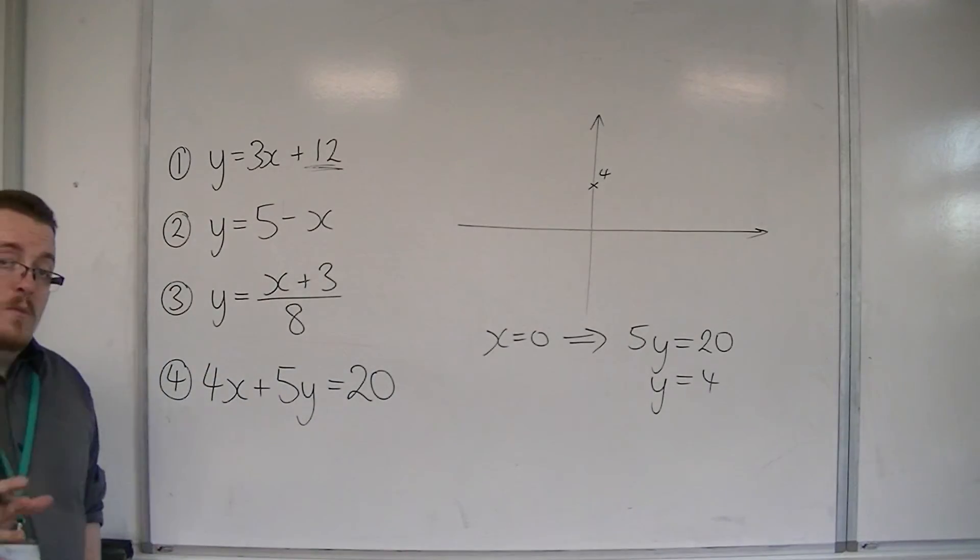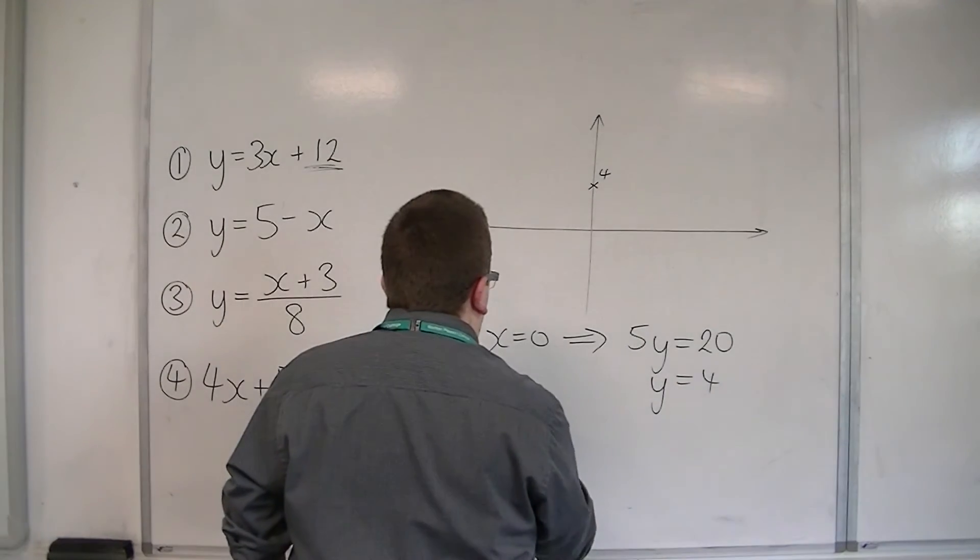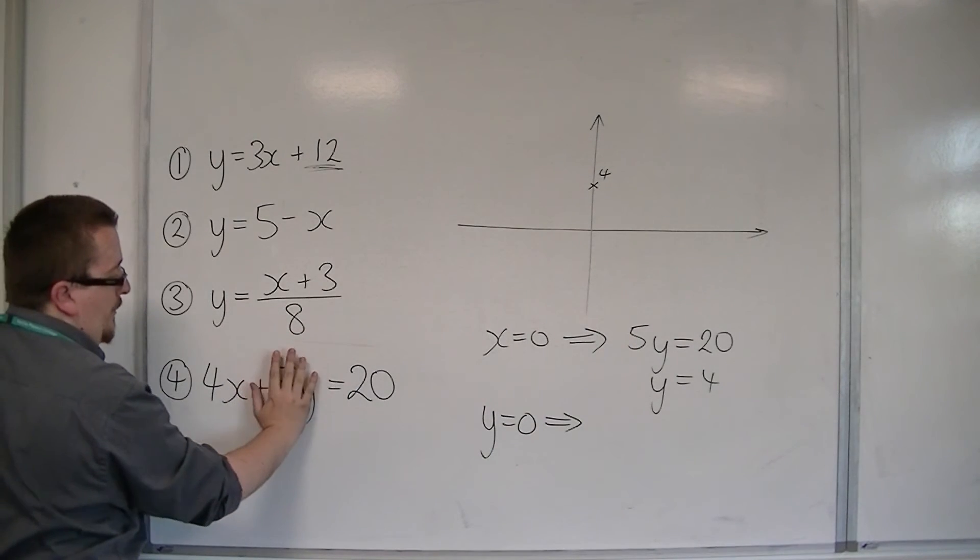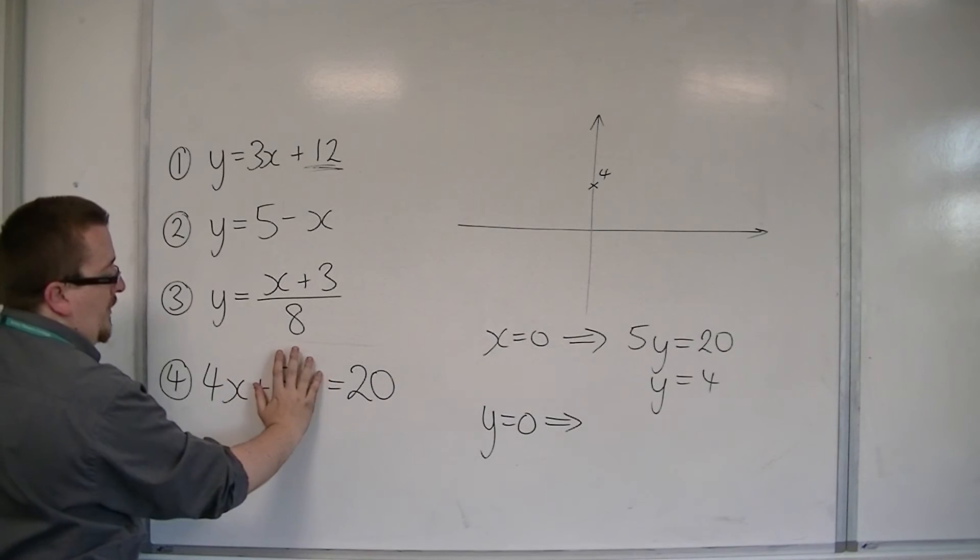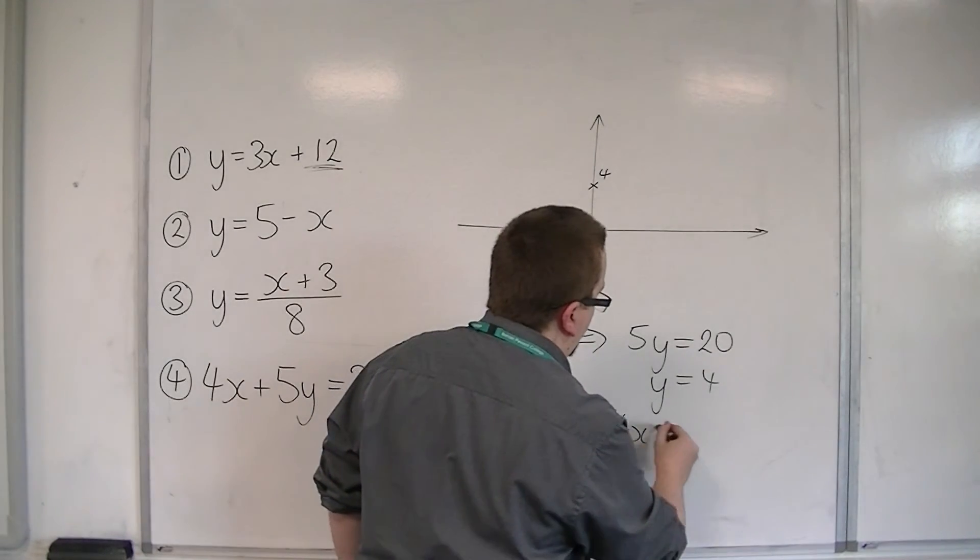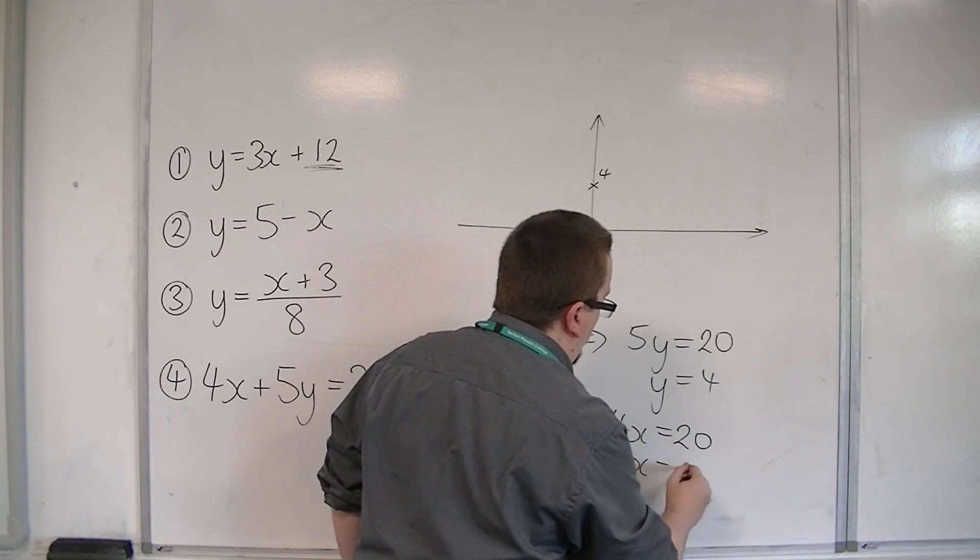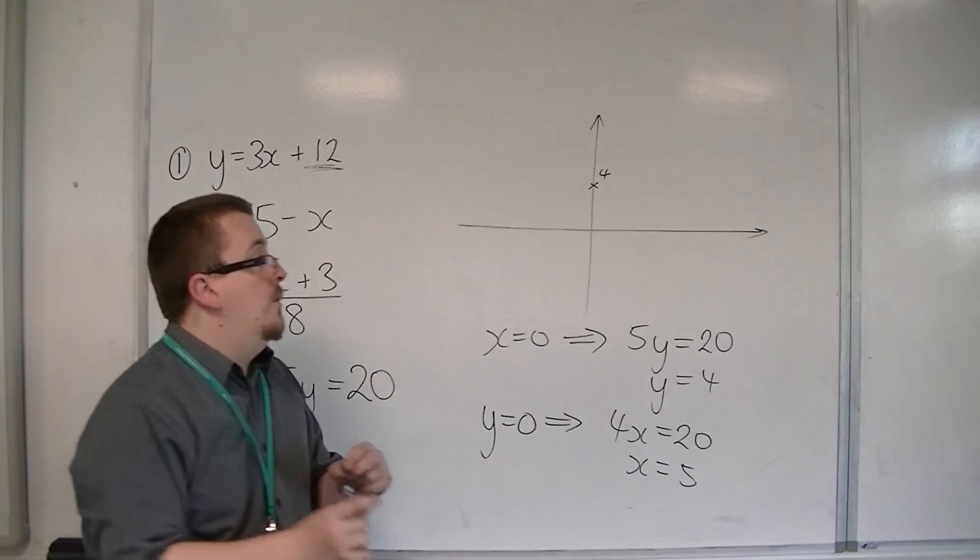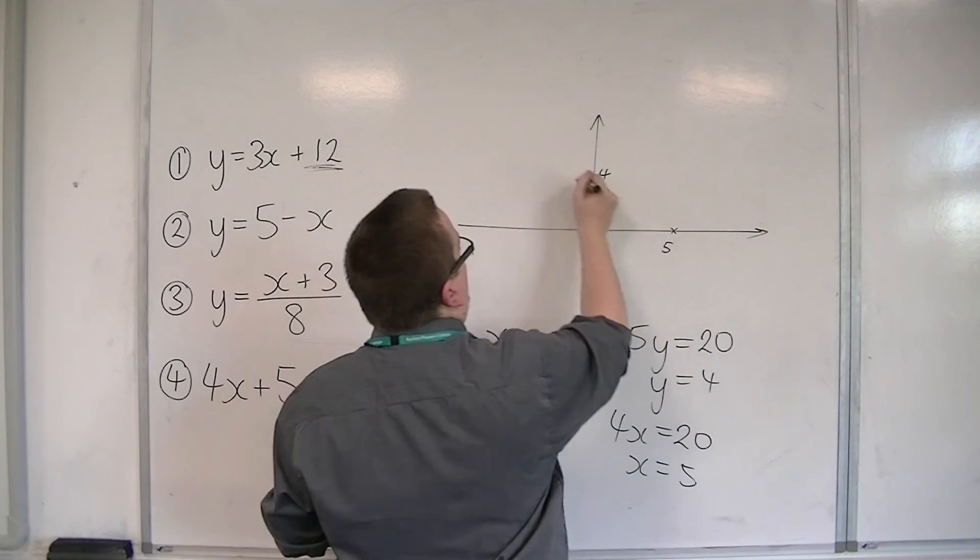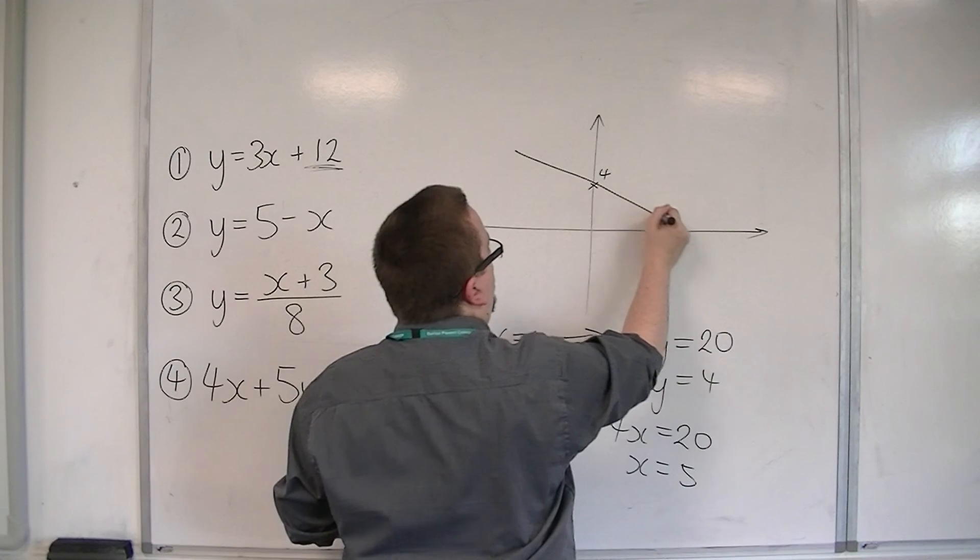Now if we do the same with y, let's put y is equal to 0, then we can cover up the 5y. And we get 4x is equal to 20. So 4x is 20, so x must be equal to 5. So 5, 0 is another coordinate.